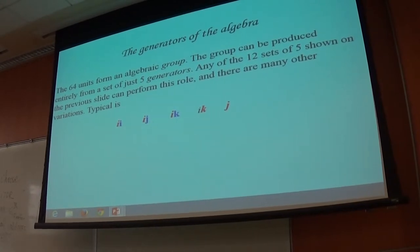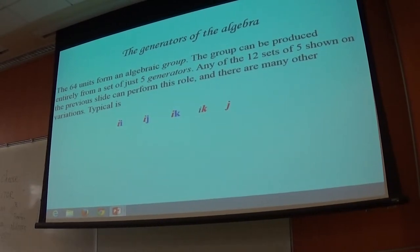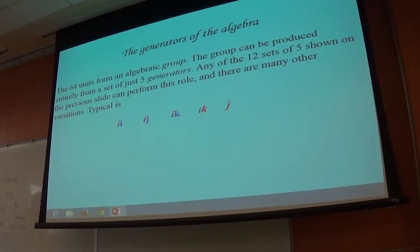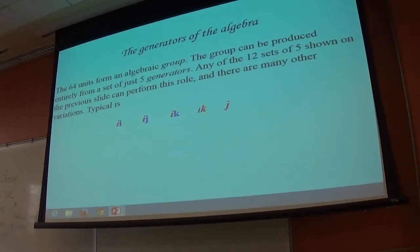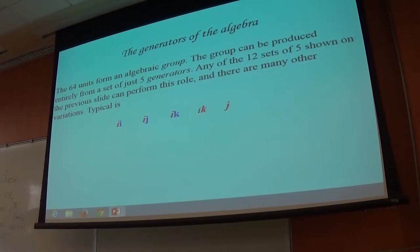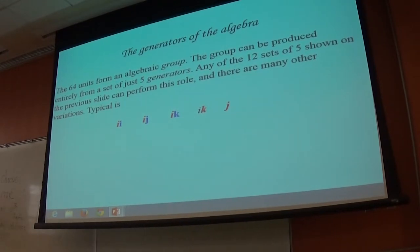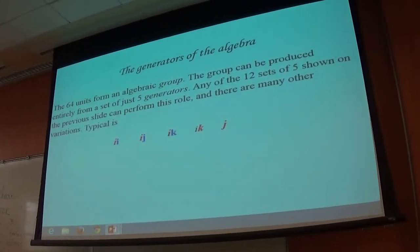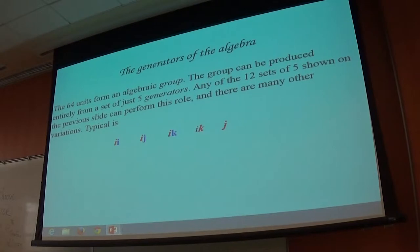To summarise: the 64 units form an algebraic group. The group can be produced from a set of just five generators. Five is where you break symmetry — anything that's five will always break symmetry; that's why you get distortion. Six wouldn't break symmetry — we could have three blue ones and three red ones, all perfectly symmetric. But five, which is the lower order, breaks symmetry. It's a bit like the Higgs mechanism — the lower order is less symmetric than the upper order.